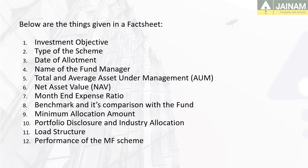Month end expense ratio — Scheme में month के end में कितना expense ratio है, यह दिखाया जाता है. जिस scheme में expense ratio कम होता है, वो profitable होती है. Benchmark and its comparison with the fund — हर एक fund का benchmark होता है जो fund के performance को track and measure करता है. Minimum allocation amount — आपने जो scheme select की है, उस scheme के stocks में कितनी minimum amount allocate हुई है, उसकी information देता है.